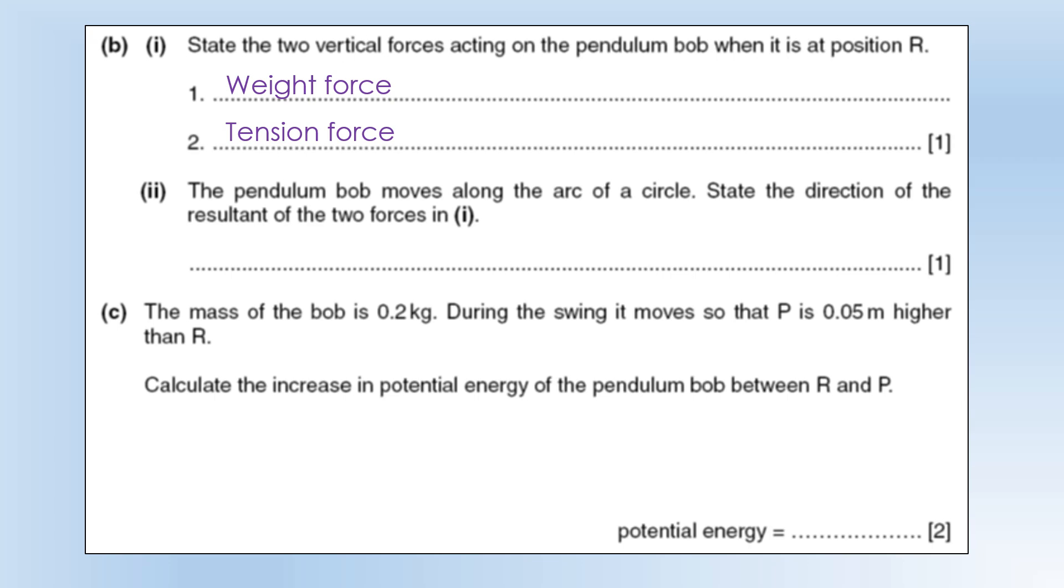The pendulum of bob moves in the arc of a circle. State the direction of the resultant of the two forces in one. Well it must be towards the center of the circle so it's upwards towards the pivot point. Remember to be in traveling in a circle you need a resultant force towards the center of the circle.